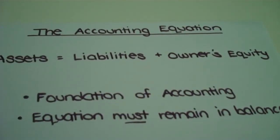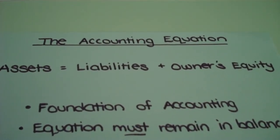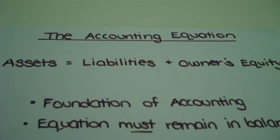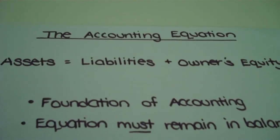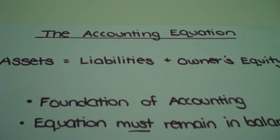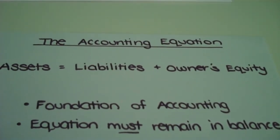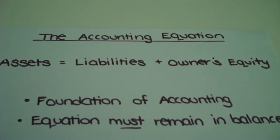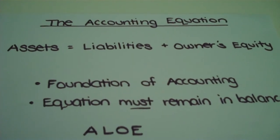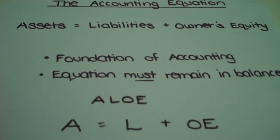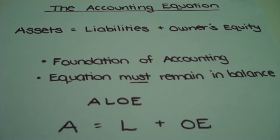As a recap, the accounting equation is assets equal liabilities plus owner's equity. It is the foundation of accounting, so please do whatever you need to in order to memorize that. If you need to write it on post-its around your house so you'll see it at all times, please do that. This equation must remain in balance — otherwise, by definition, it's no longer an equation. A mnemonic to help you remember this is ALOE, just like the plant, which stands for Assets equal Liabilities plus Owner's Equity.